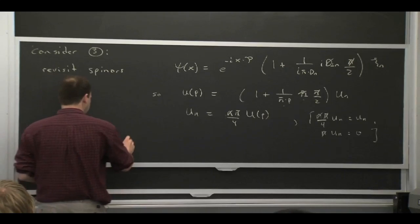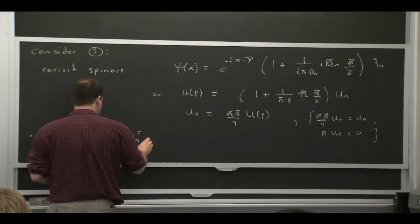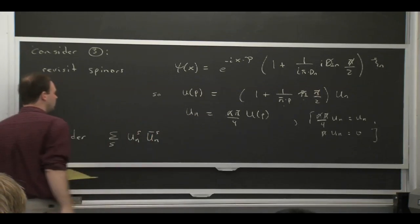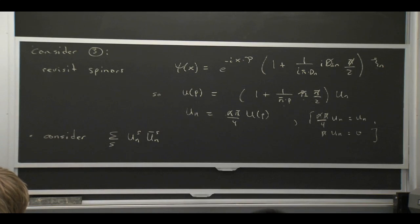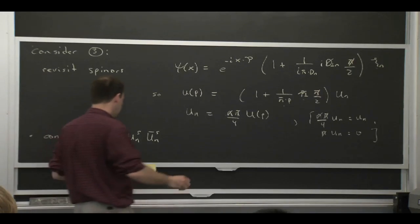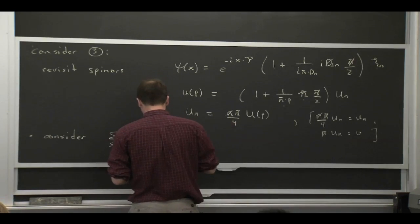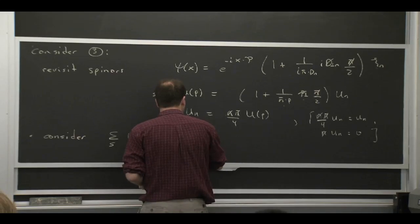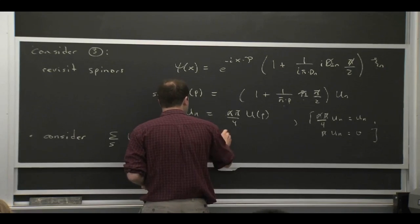If you consider this formula and you consider the sum over spins of u, u bar, which is what's going to appear in the numerator of the propagator for the fermion when you're deriving the fermion propagator, you get a sum over the physical spins. Then from this formula, this is a projector on something you know how to do the spin sum for, which is the full theory spinner.